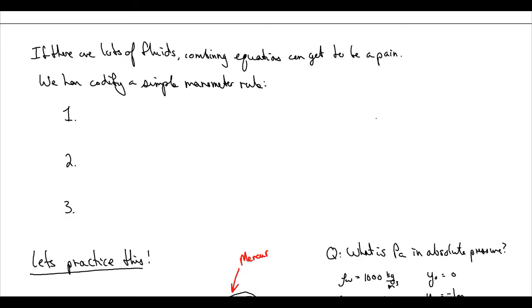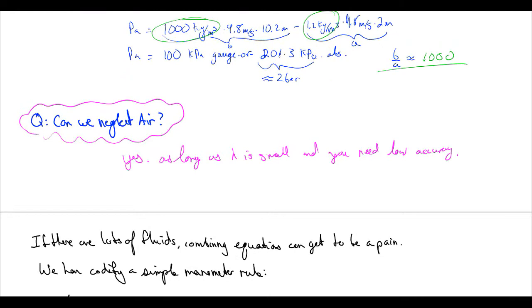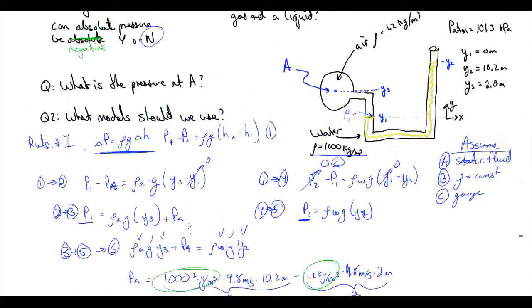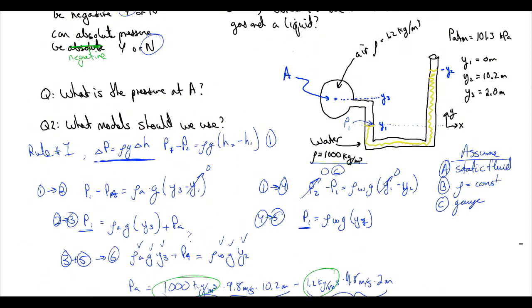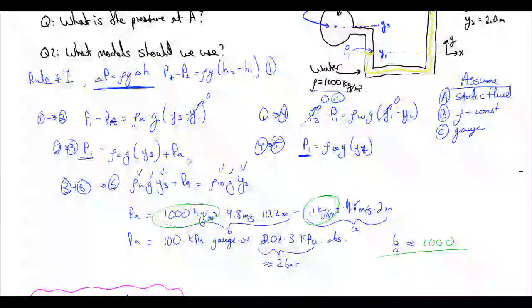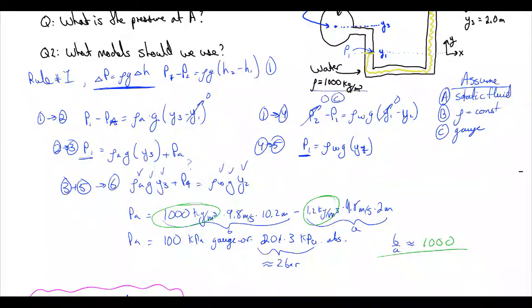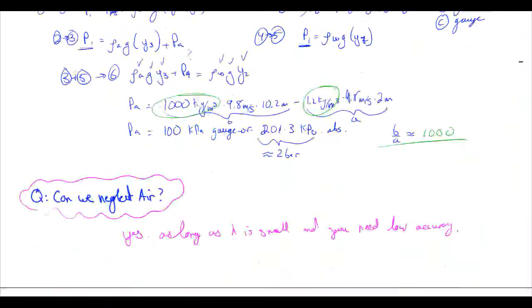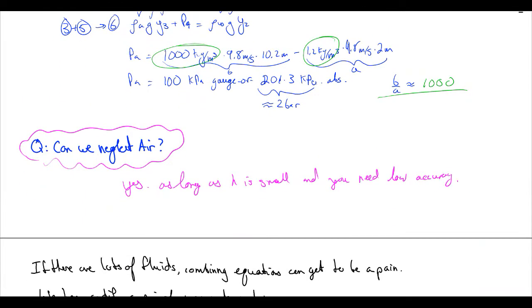Okay, so last lecture we learned how to tackle a simple manometer, a very typical one with air and one fluid. We learned that as long as we're dealing with typical amounts of precision, we can ignore the density of air because its density is so low, and as long as the heights are not incredible, like on the order of hundreds of meters.